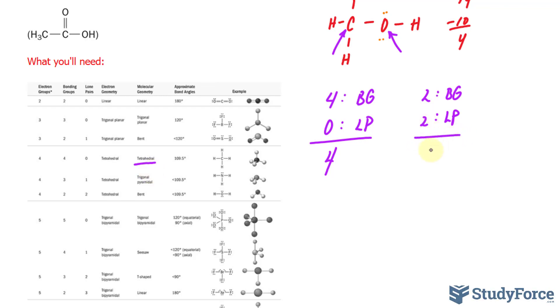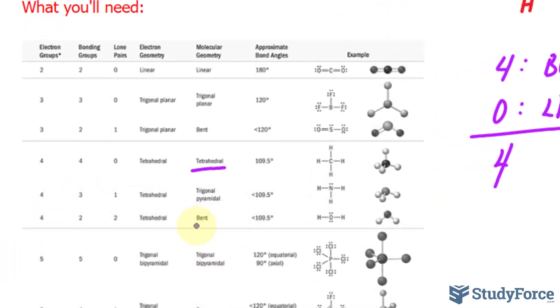This oxygen is two plus two, which is four electron groups. Focusing on over here, we will have a bent shape, which is less than 109.5 degrees.